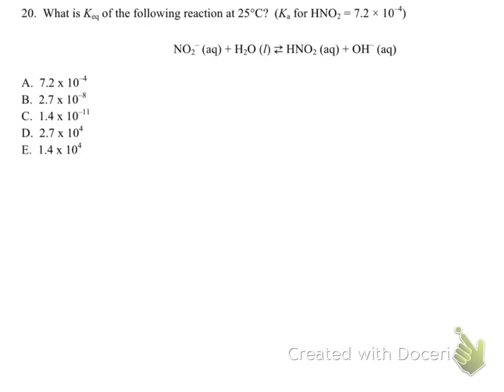In this question, we're looking for the KEQ of this reaction right here, given the KA of HNO2. So this question just becomes about recognizing what our reaction is. Well, our reaction that we have is NO2 minus, which is the conjugate base of HNO2, reacting with water and hydrolyzing it to form hydroxide. Wait a minute! This is a KB reaction! As soon as we recognize that, this problem becomes pretty straightforward.